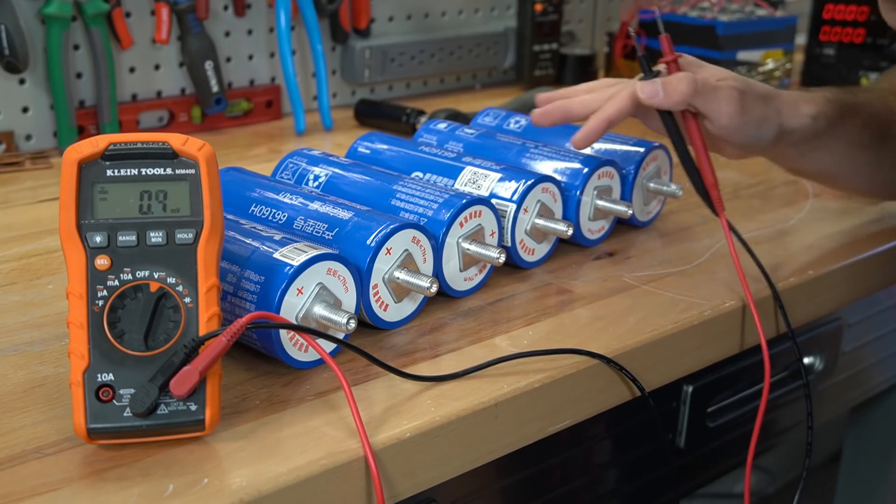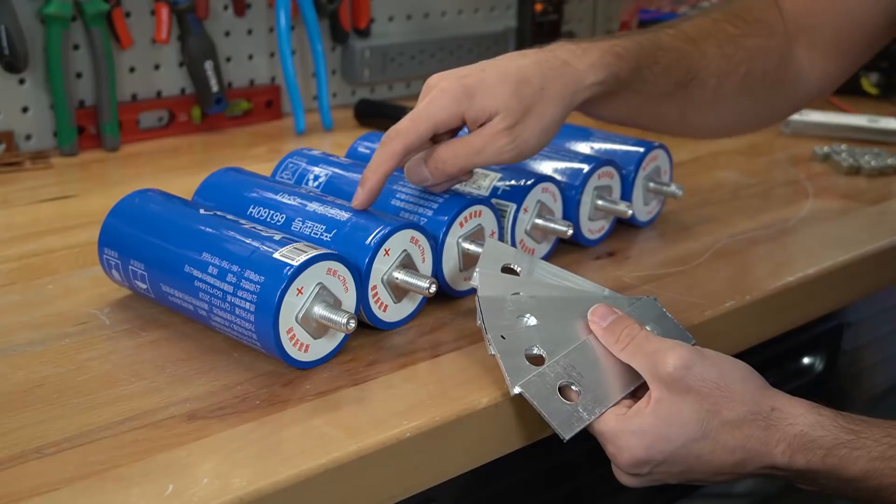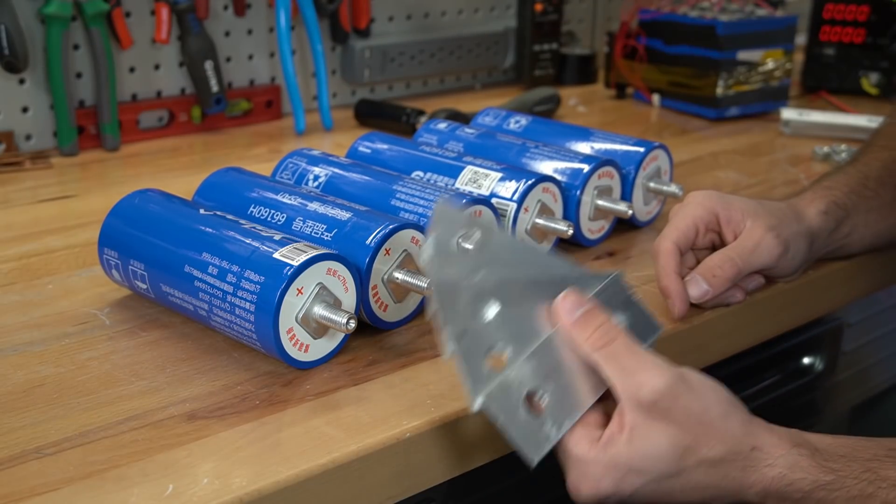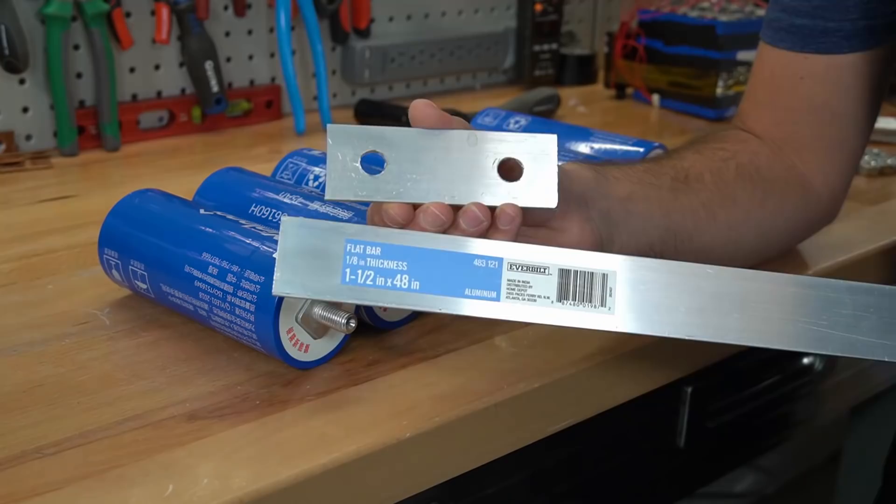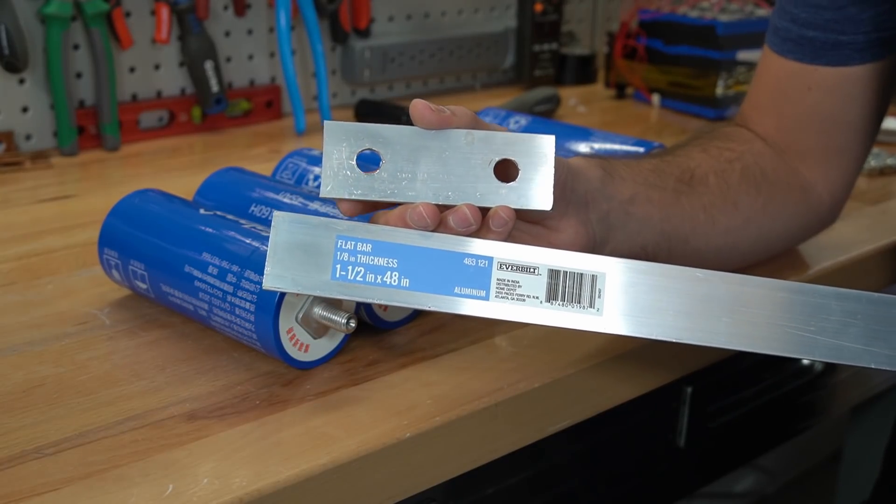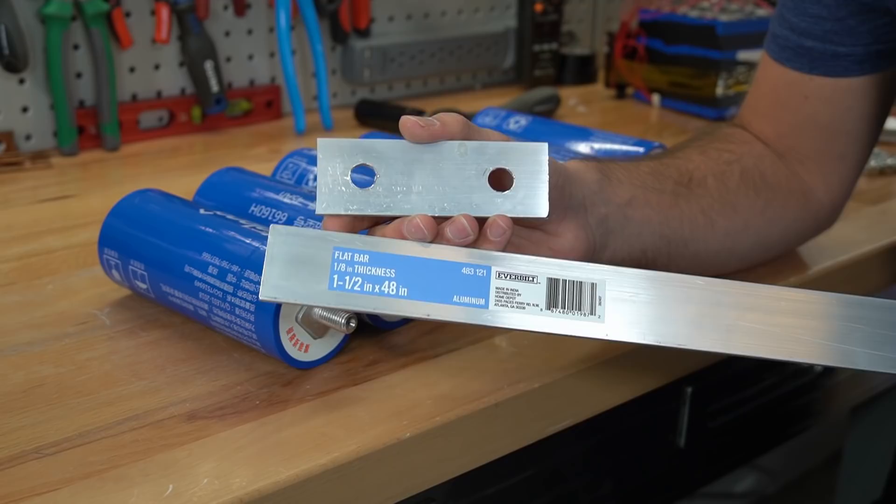These cells are a bit off so we need to connect them in parallel and do a top balance. To connect these cells in parallel we're going to use some of my homemade aluminum bus bars. I made these bus bars by drilling and cutting some 1/8 inch thickness aluminum from the store.